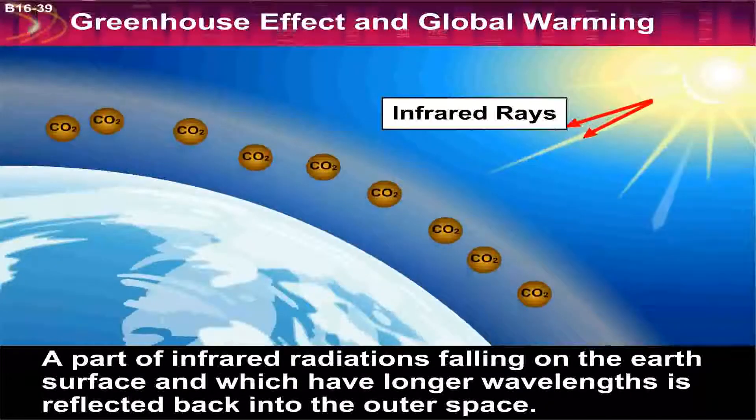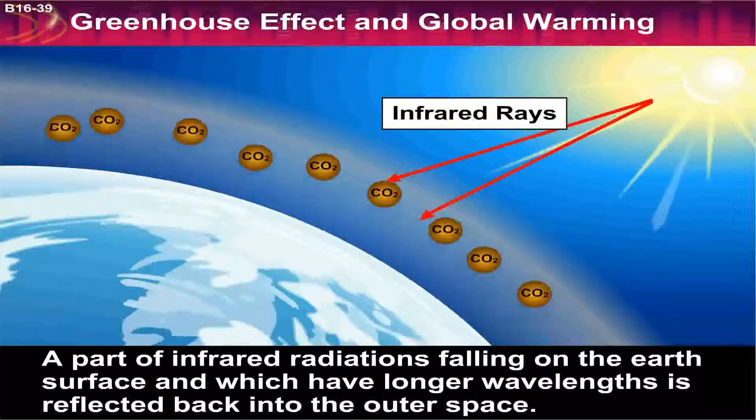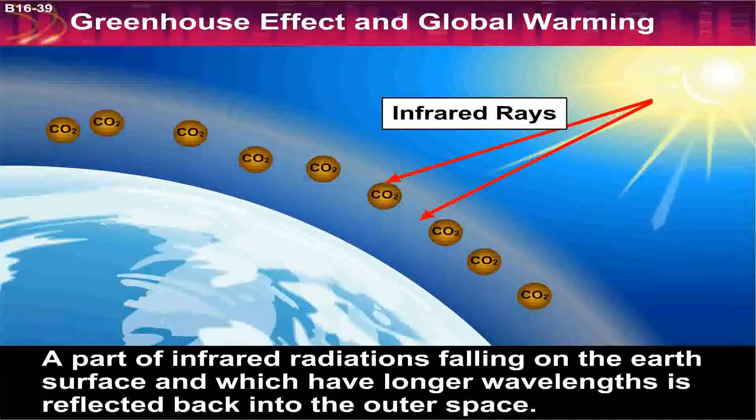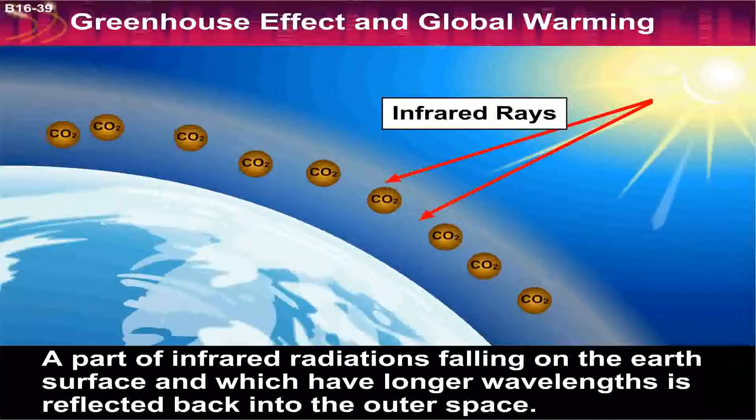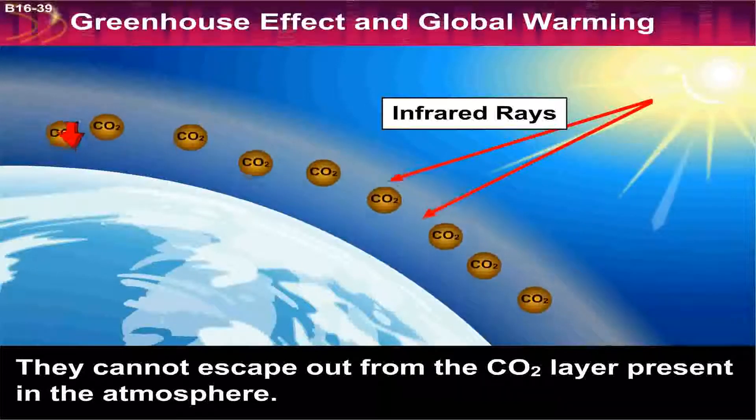A part of infrared radiations falling on the earth's surface which have longer wavelengths is reflected back into outer space. They cannot escape out from the carbon dioxide layer present in the atmosphere.